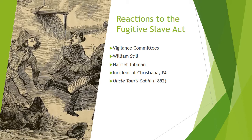After the Fugitive Slave Act was passed, vigilance committees, which had once been all Black, became increasingly interracial. These committees were on the lookout for slave catchers and expanded the network of cellars, church basements, and other safe places where refugees could hide. William Still and Harriet Tubman were important leaders of the Underground Railroad and vigilance committee anti-slavery network. Tubman, who was a runaway herself, personally traveled to the South at least 14 times to help 130 slaves escape. William Still published his stories about the network in the 1872 book The Underground Railroad.